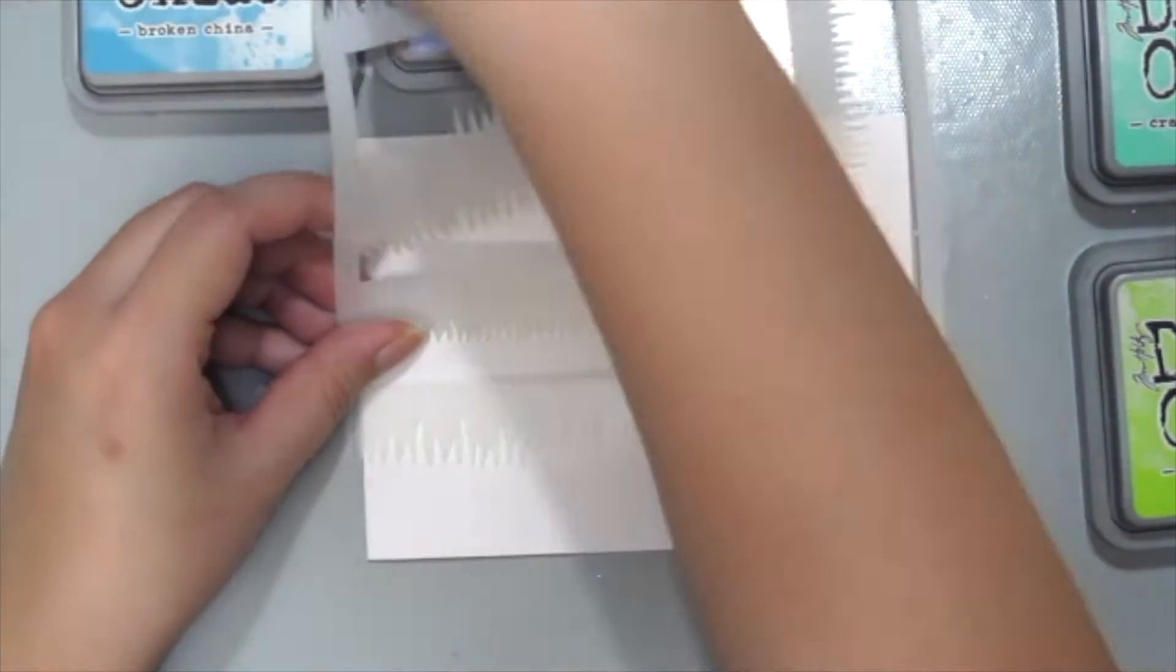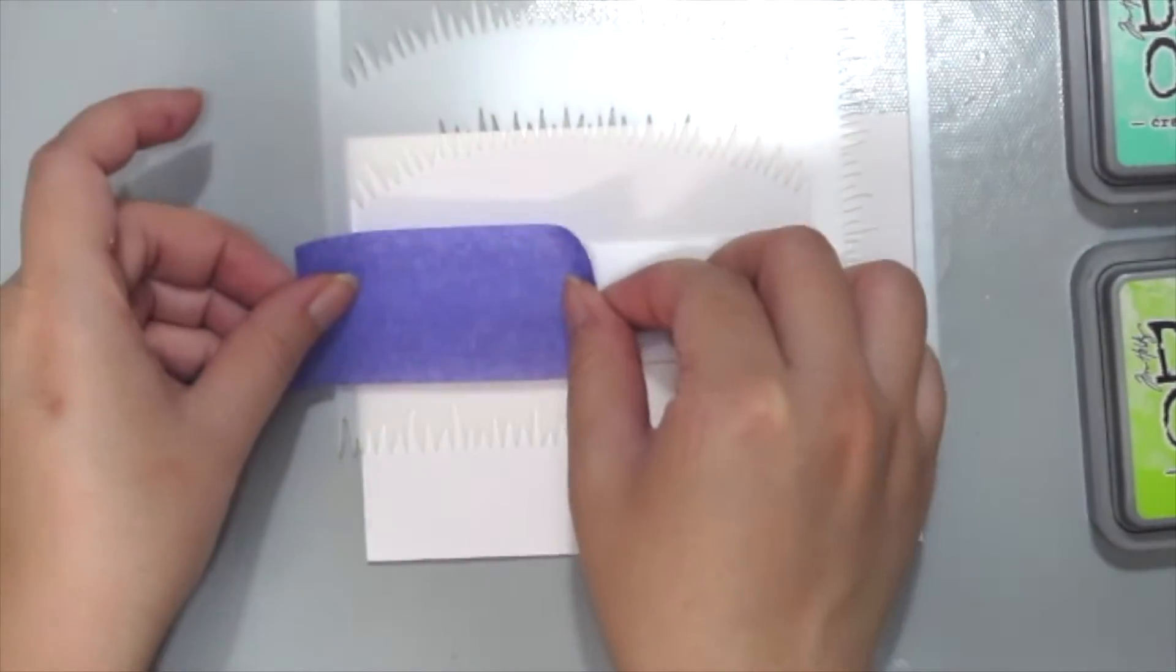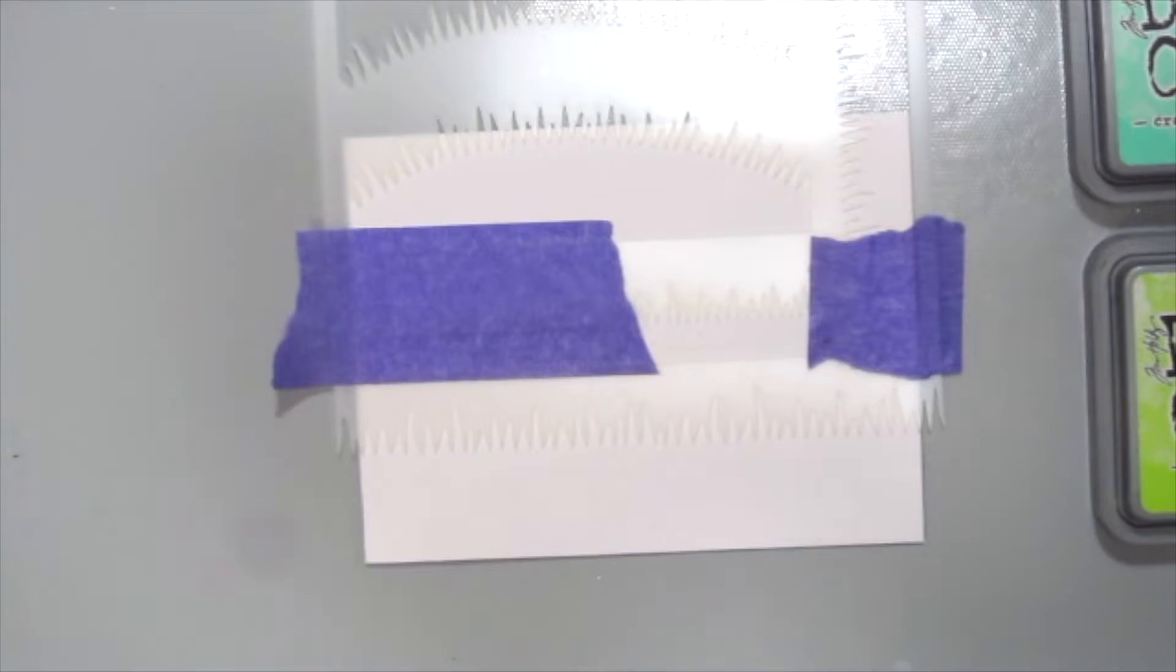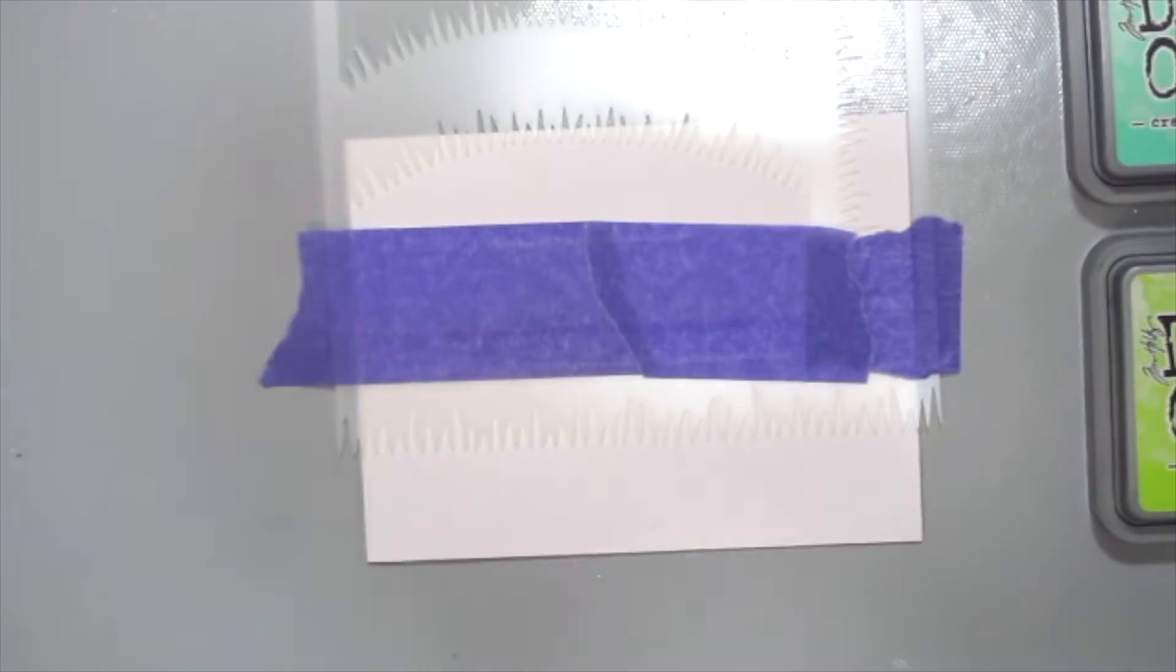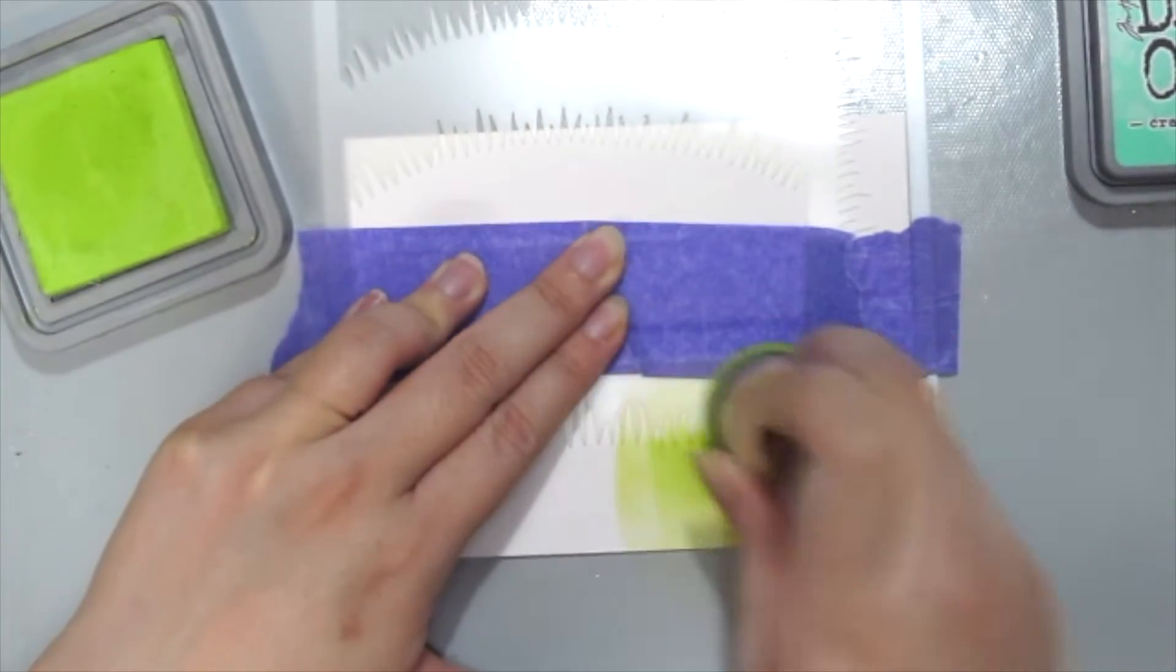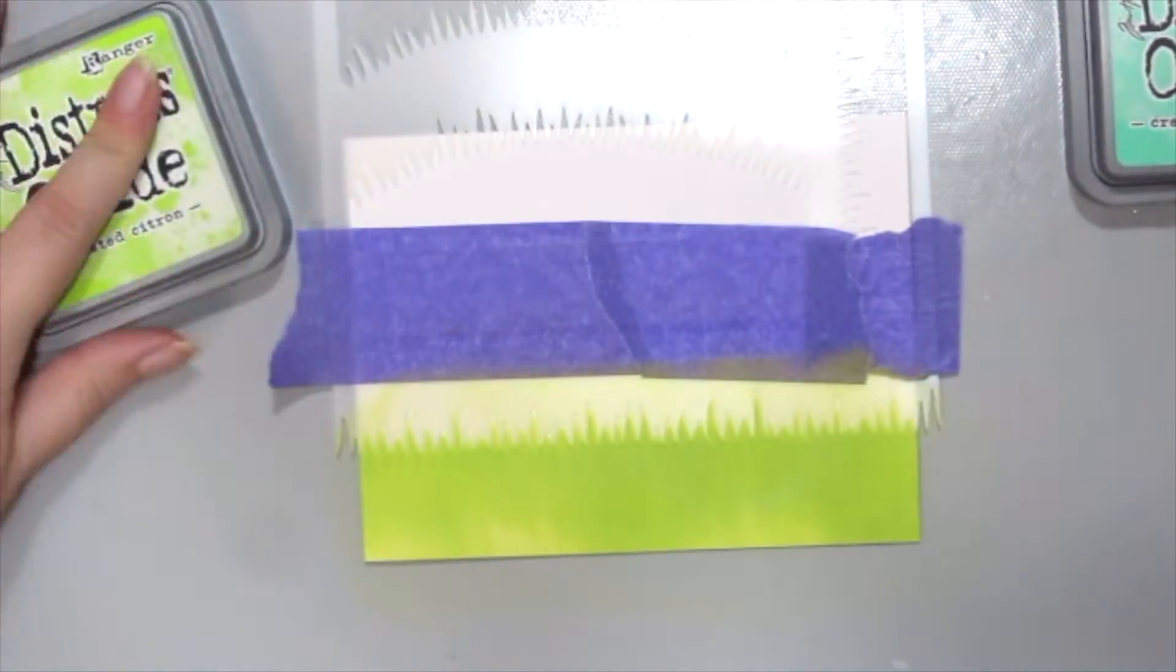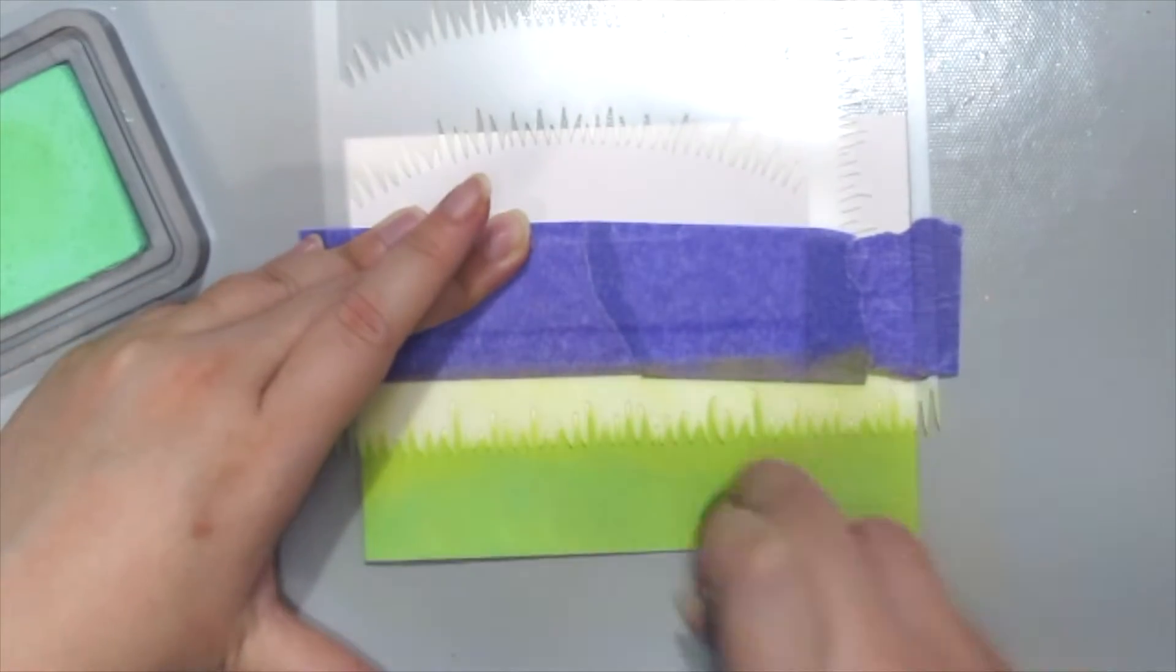First, I'm going to use the bottom part of the stencil here, and just because I want to use the bottom part, I'm going to mask off the other areas using the thermal web purple tape here, which is awesome because it is reusable as well. Then I'm grabbing my ink blender and the Twisted Citron color, which is a light lime green color, to ink up my grass. And to add some gradient and shadowing to it, I'm grabbing the Cracked Pistachio color.